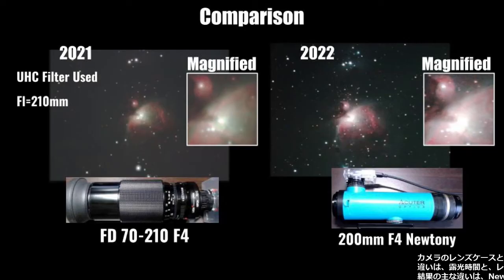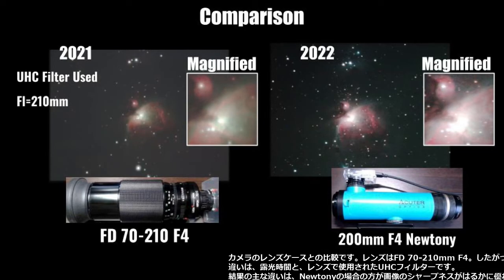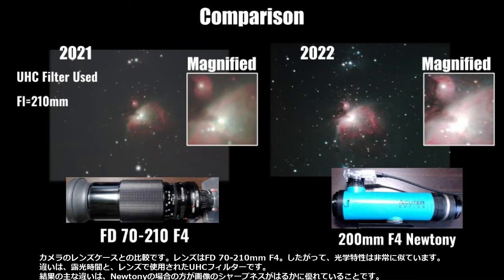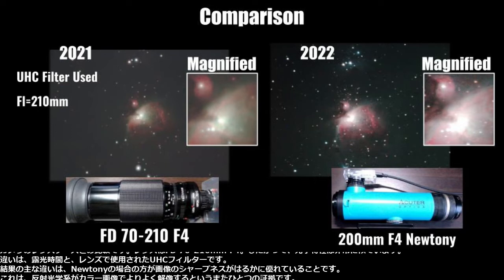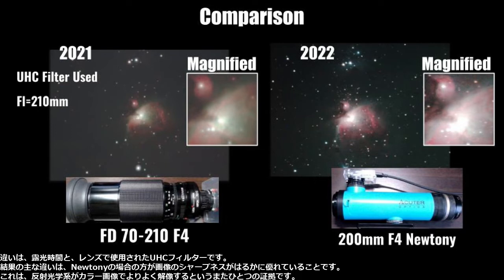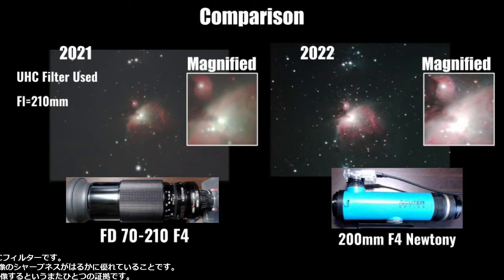Here is another comparison to the camera lens case. The lens is an FD 70-210mm f4, so the optical properties are very similar. The differences are the exposure time and the use of the UHC filter used with the lens. The major difference in outcome is that the image sharpness is much better in the Newtonian case. This is just another evidence that reflective optics will resolve better in color images.